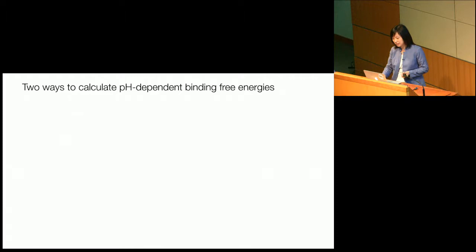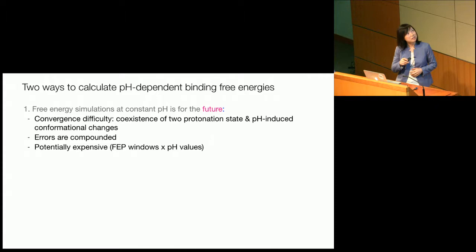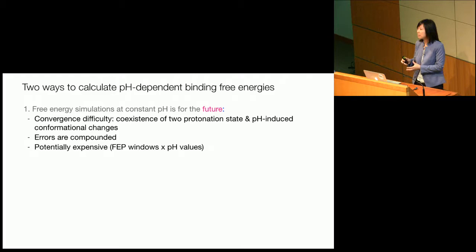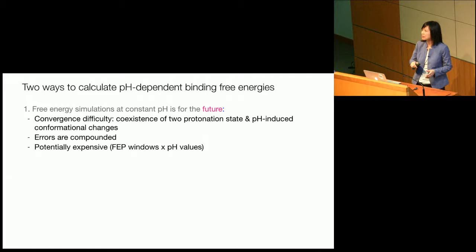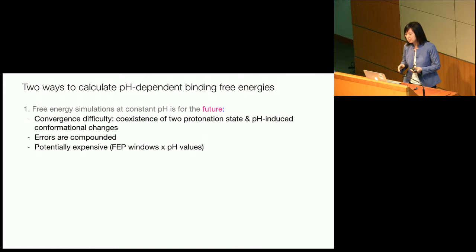There are two ways to incorporate pH into binding free energy calculations. The first method is to incorporate constant pH MD into conventional free energy simulations. This approach has potential for the future but has a convergence difficulty: if we run constant pH MD and a histidine wants to be in both protonation states, each lambda window would sample both protonation states, requiring very long simulations. You may also have pH-induced conformational changes, and errors from the FEP calculation may compound with errors from the constant pH calculation. It's also expensive, combining FEP windows with the number of pH replicas needed.